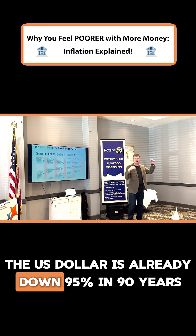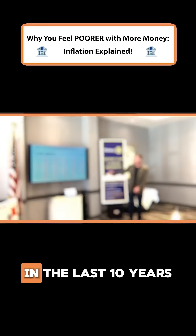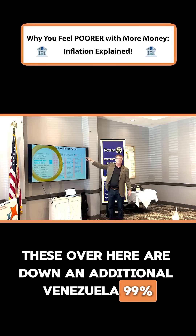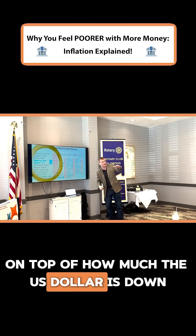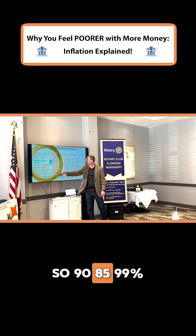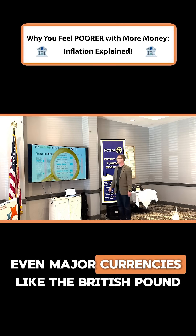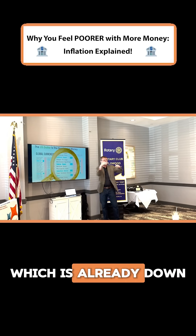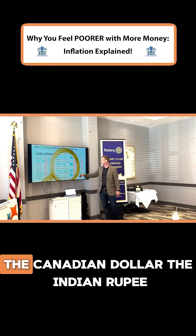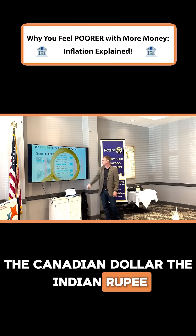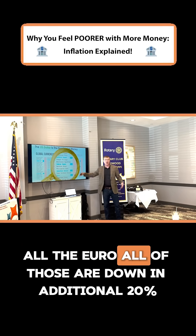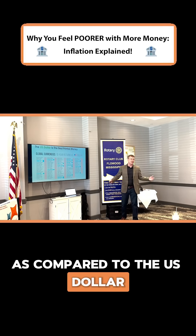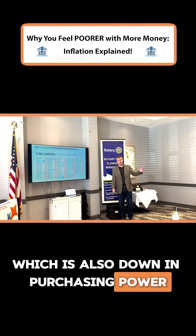The US dollar is already down 95% in 90 years. In the last 10 years, these over here are down an additional — Venezuela, 99% on top of how much the US dollar is down. So 90%, 85%, 99%. Even major currencies like the British pound is down 25% compared to the dollar, which is already down. The Canadian dollar, the Indian rupee, the Euro — all of those are down an additional 20% just in the last 10 years, as compared to the US dollar, which is also down in purchasing power precipitously.